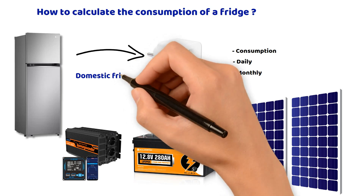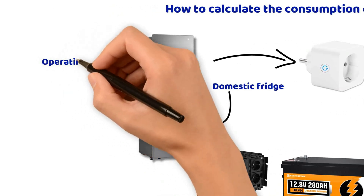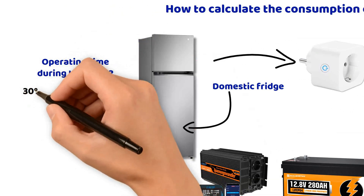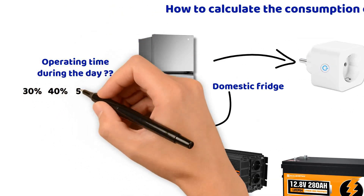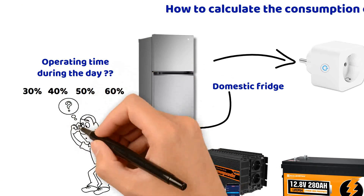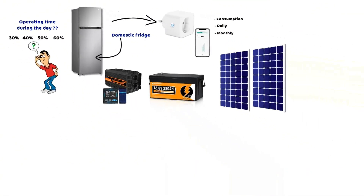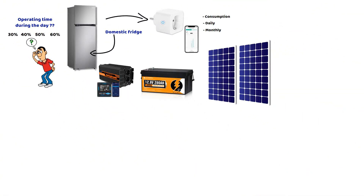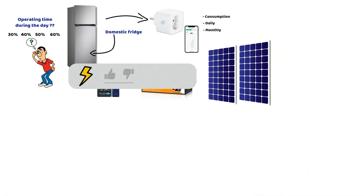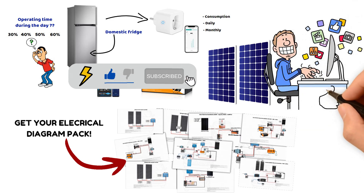In this example we will take my household fridge which runs on alternating current. We will also see how long a fridge runs during the day — and by the way, what would you guess? Around 30 to 60% of the time? Let us know in the comments before finding out the answer. Before we begin, you will find our electrical diagram pack in the video description. Also consider subscribing to the channel, give us a like, and feel free to ask your questions in the comments.